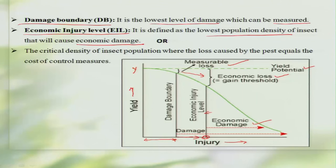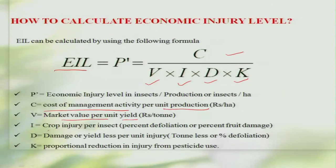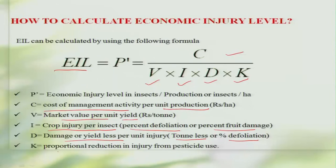Let us look at how the economic injury level can be calculated. There is a formula: EIL = C / (V × I × D × K), where C is the cost of management activity per unit production, V is the market value per unit yield, I is the crop injury per insect such as percent defoliation per insect, D is the damage or yield loss per unit injury — how much yield reduction happens per unit of injury — and K is the proportional reduction in injury from pesticide usage.